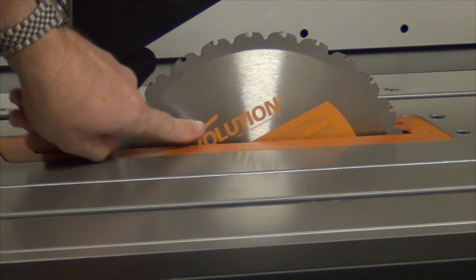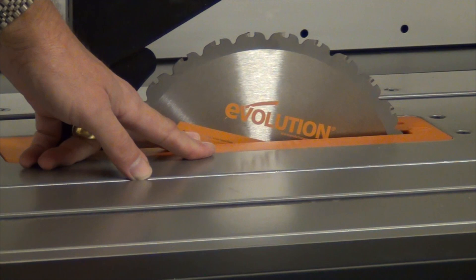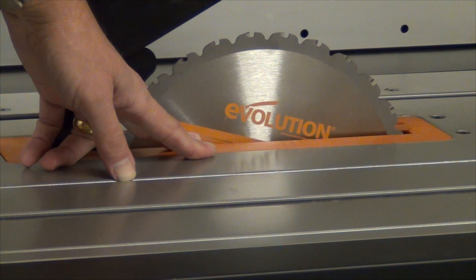The saw comes fitted with Evolution's Rage multi-purpose blade for cutting both wood, steel, aluminium and plastics. And the saw will also take their separate blades for particularly fine work in wood and for cutting ceramics and tiles.